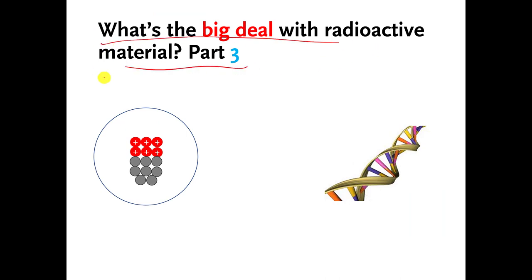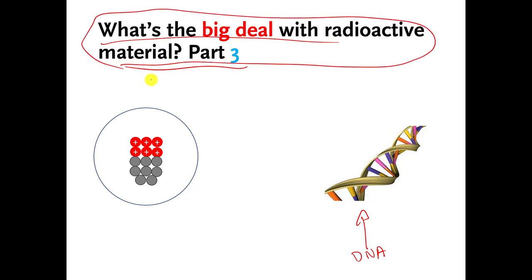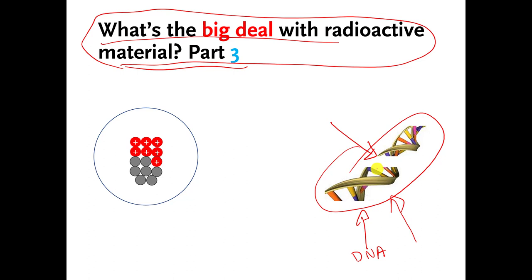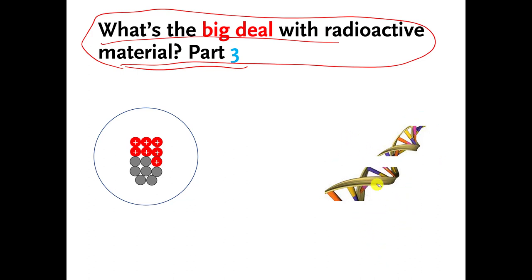What's the big deal with radioactive material, part three? This is supposed to be a picture of your genetic material — your DNA. The problem with radioactive material and people is that the things that get fired off are very often absorbed by our genetic material and other molecules in our body, and they have enough energy to damage our genetic material. You can see the DNA got cut, and if you do enough damage to your genetic material, you can end up with things like cancer or birth defects. So radioactive material can be used destructively. You can also use it to generate electricity, and there are also useful things in medicine that involve radioactive materials — I talked about PET scans in an earlier video.